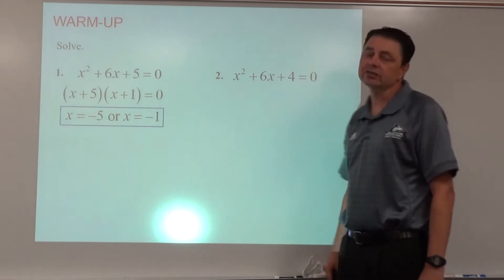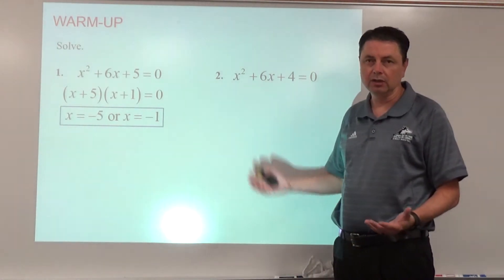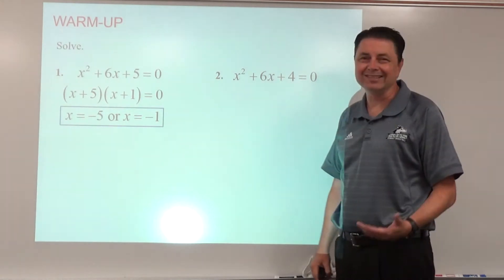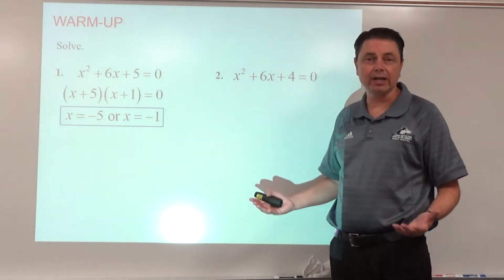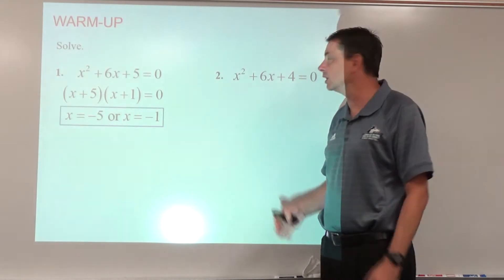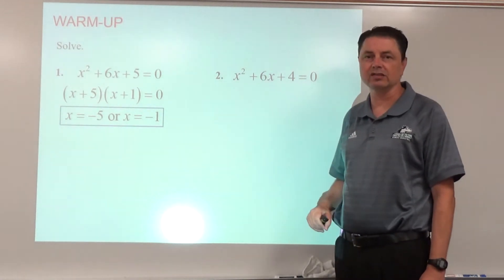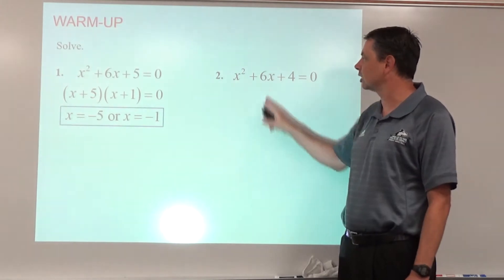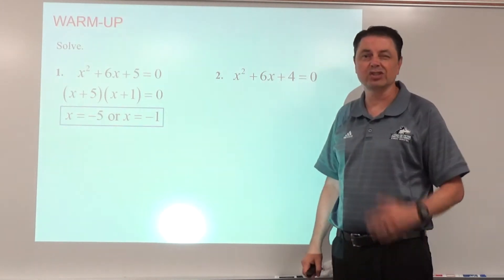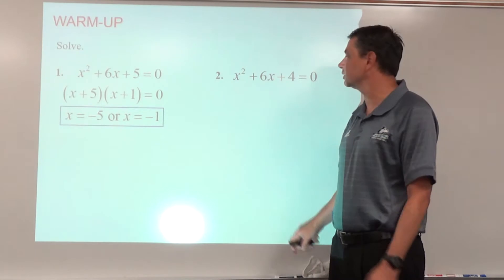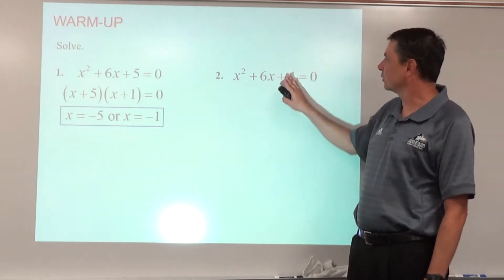We could also try factoring for number two, but it just doesn't factor under normal processes. Another strategy is the quadratic formula, but in this case — because it is 1x² at the start and an even coefficient of x as our b value — completing the square is our best bet.